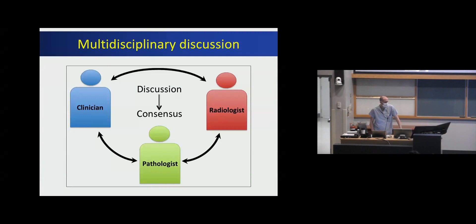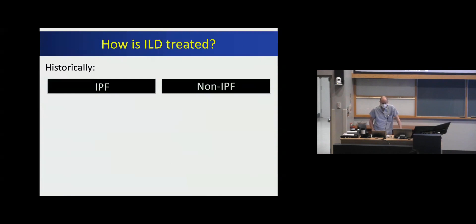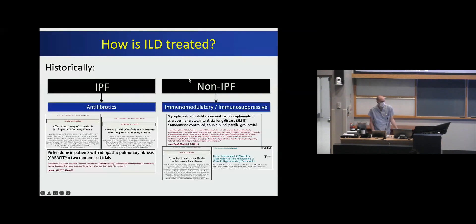The way we approach this now is to integrate clinical features — exposure history, connective tissue disease features — with imaging features and pathology, then discuss and come to a consensus diagnosis. To simplify: you either have IPF, something else, or you're unclassifiable. Treatment has historically been dichotomized as IPF versus non-IPF ILD. If you have IPF, we treat with antifibrotic medications — nintedanib or pirfenidone — supported by those three clinical trials. For non-IPF things like connective tissue disease or hypersensitivity pneumonitis, we use immunomodulatory or immunosuppressive medications, with mycophenolate generally being the preferred option giving the best balance of efficacy and side effects.